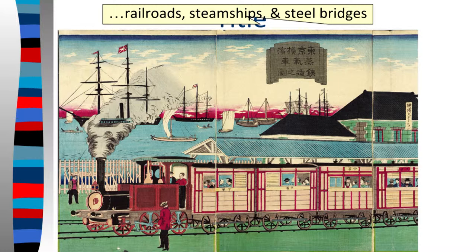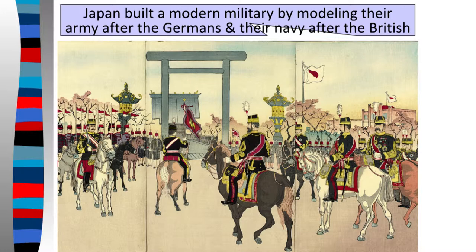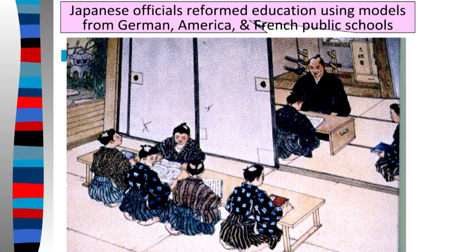This is how Japan got to the exact same level as Europe. Japan also built a modern military, modeling their army after the Germans and their Navy after the British — a weird combination that would be very strange once we get to World War Two. Japan also started reforming education, taking models of how education systems work from Germany, France, and the US for their public schools.